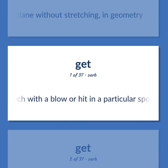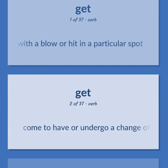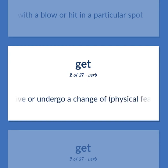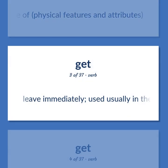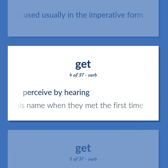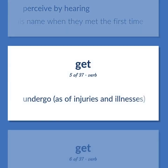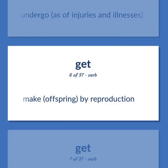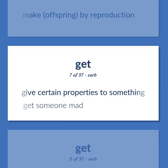Get: Reach with a blow or hit in a particular spot. Come to have or undergo a change of physical features and attributes. Leave immediately — used usually in the imperative form. Perceive by hearing — she didn't get his name when they met the first time. Undergo, as of injuries and illnesses. Make offspring by reproduction. Give certain properties to something — get someone mad.